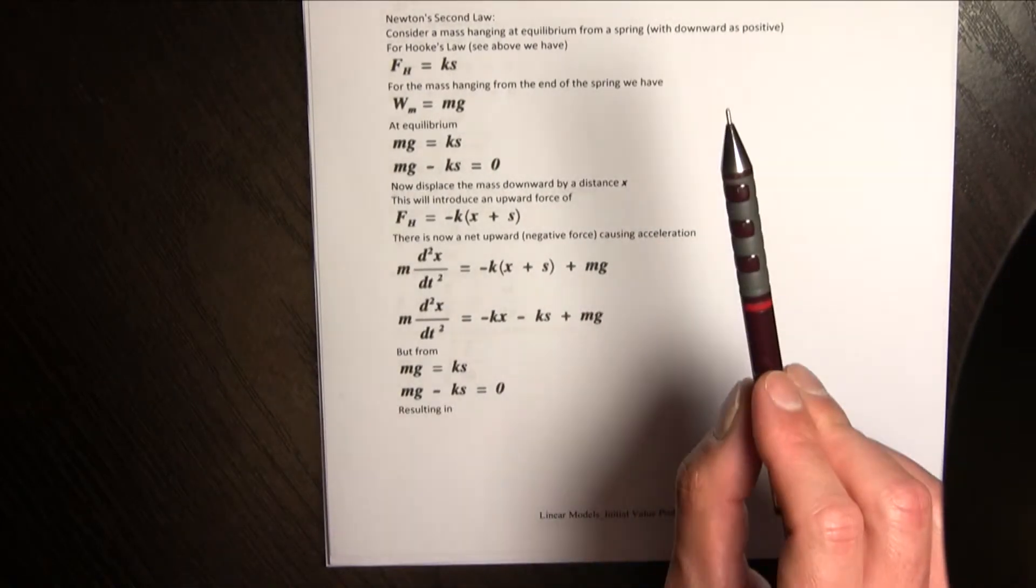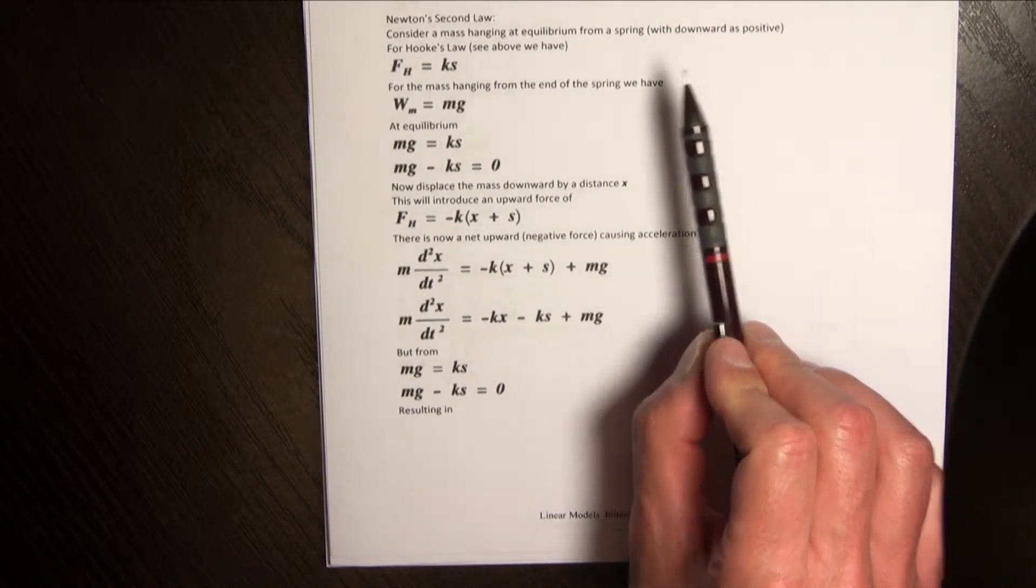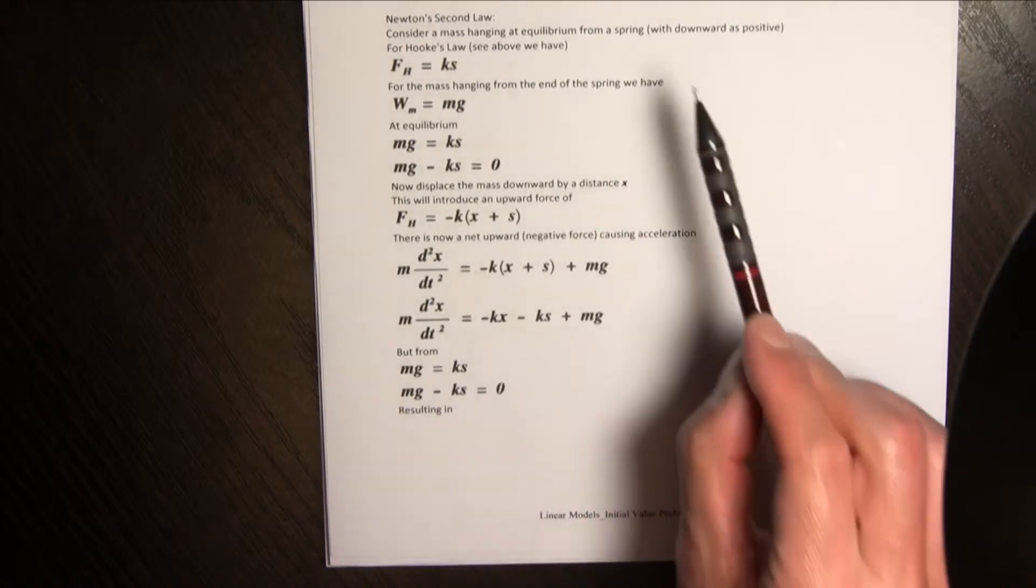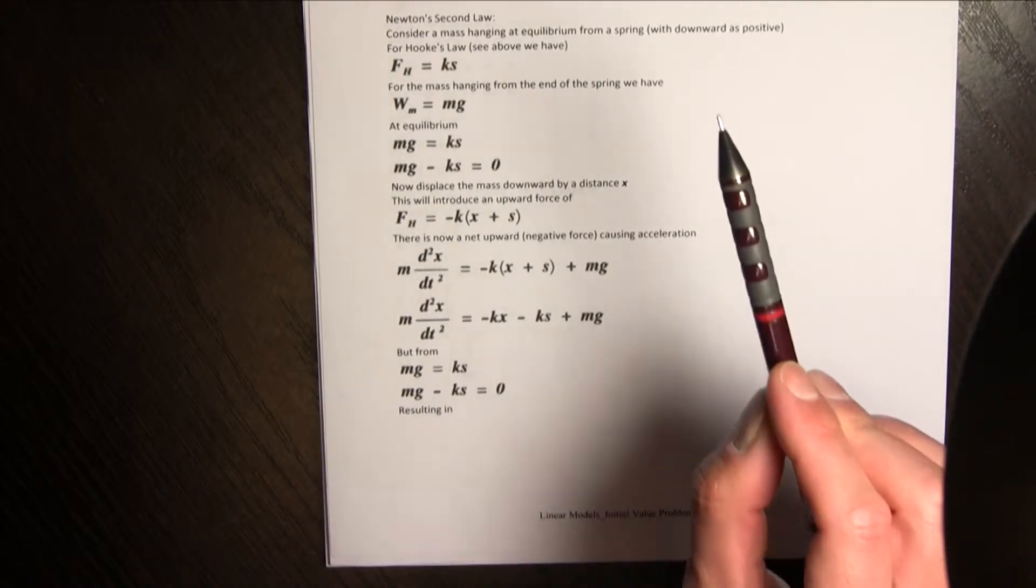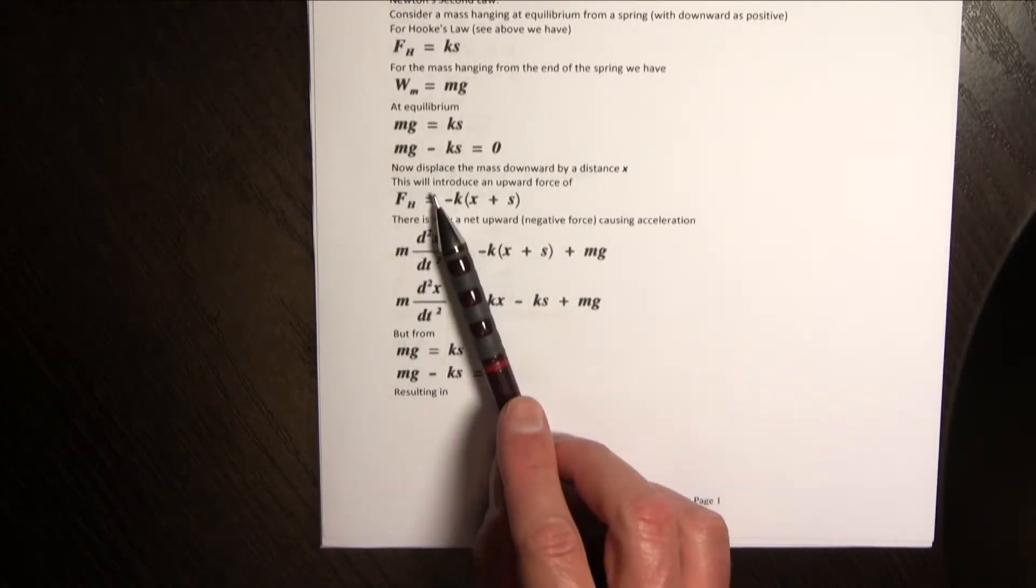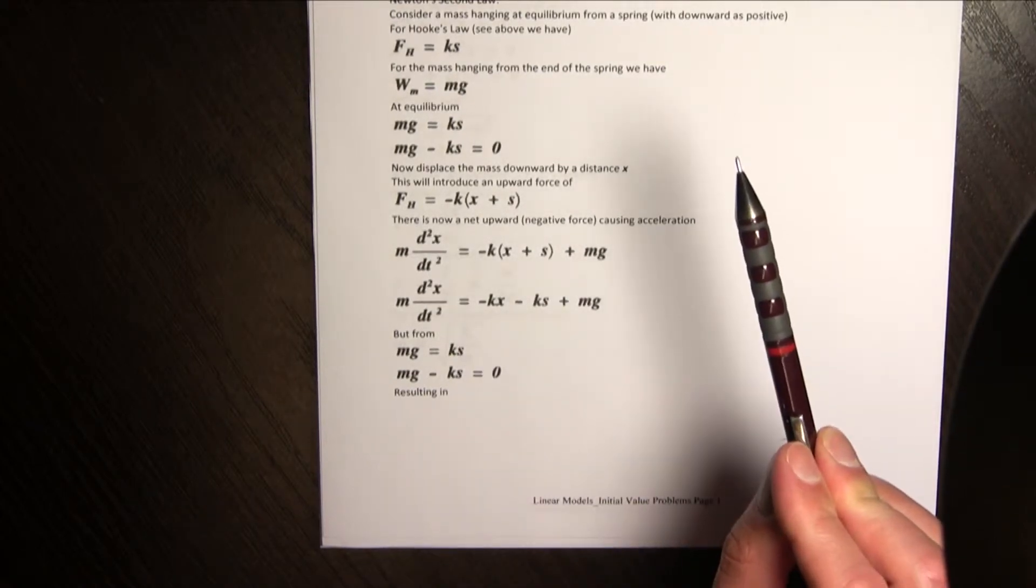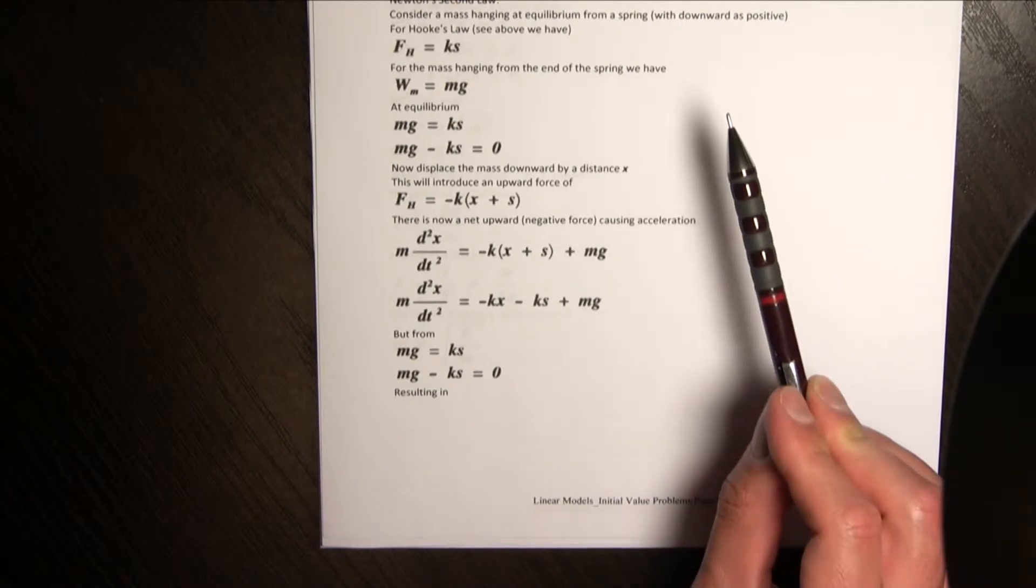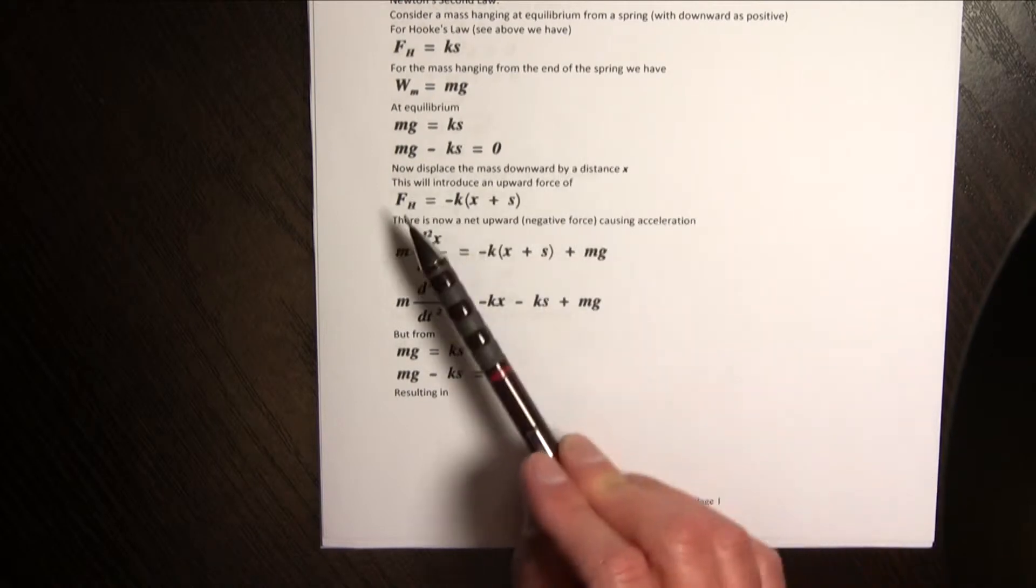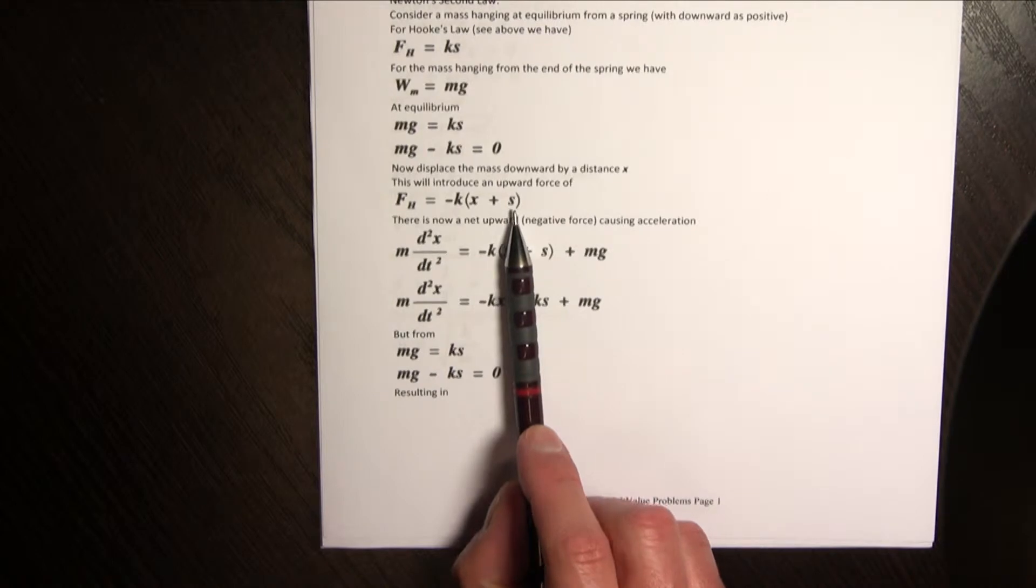So at equilibrium I've put the block on it hangs there and it stands still. At equilibrium mg has got to equal ks or mg minus ks, mg is positive ks is negative, if I had two vectors that's going to be zero. Now there's going to be a new force because that spring there's going to be a new restoring force and as much as that spring has now been pulled down an extra bit of distance.